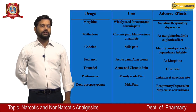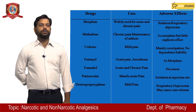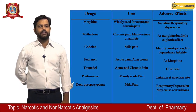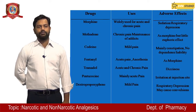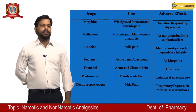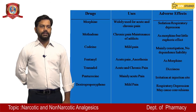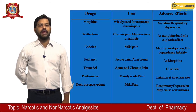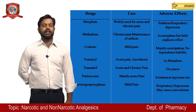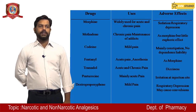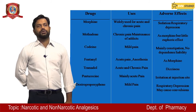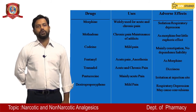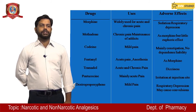Tramadol is used in acute and chronic pain. Its adverse effect is dizziness. Pentazocine is used mainly in acute pain and its adverse effect is irritation at the injection site, as it is generally given through IV or IM route.